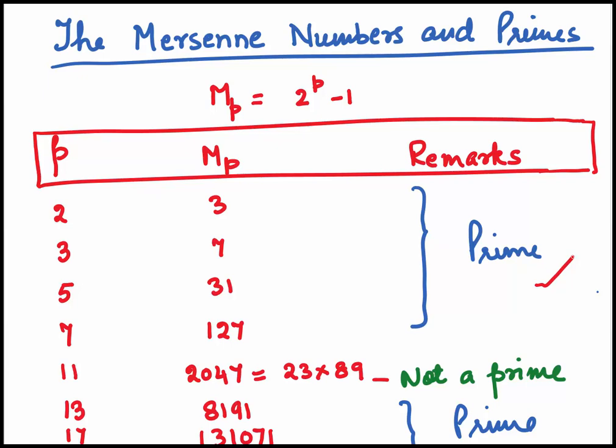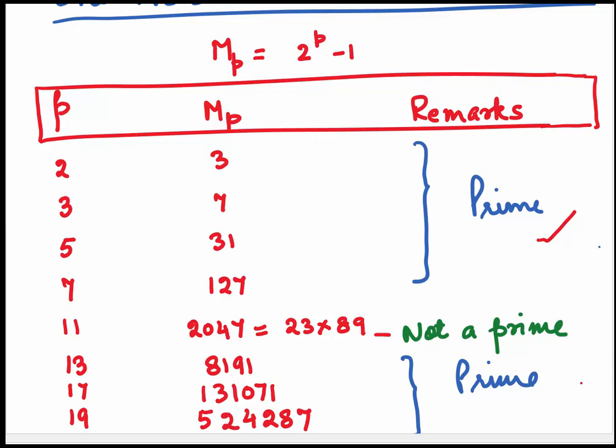But when we come to p = 11, we get 2047, which is a composite number. It's not prime. Take p to be 13, you get Mp as 8191. When you take p to be 17, we get 131071. And when p is 19, we get Mp as 524287.